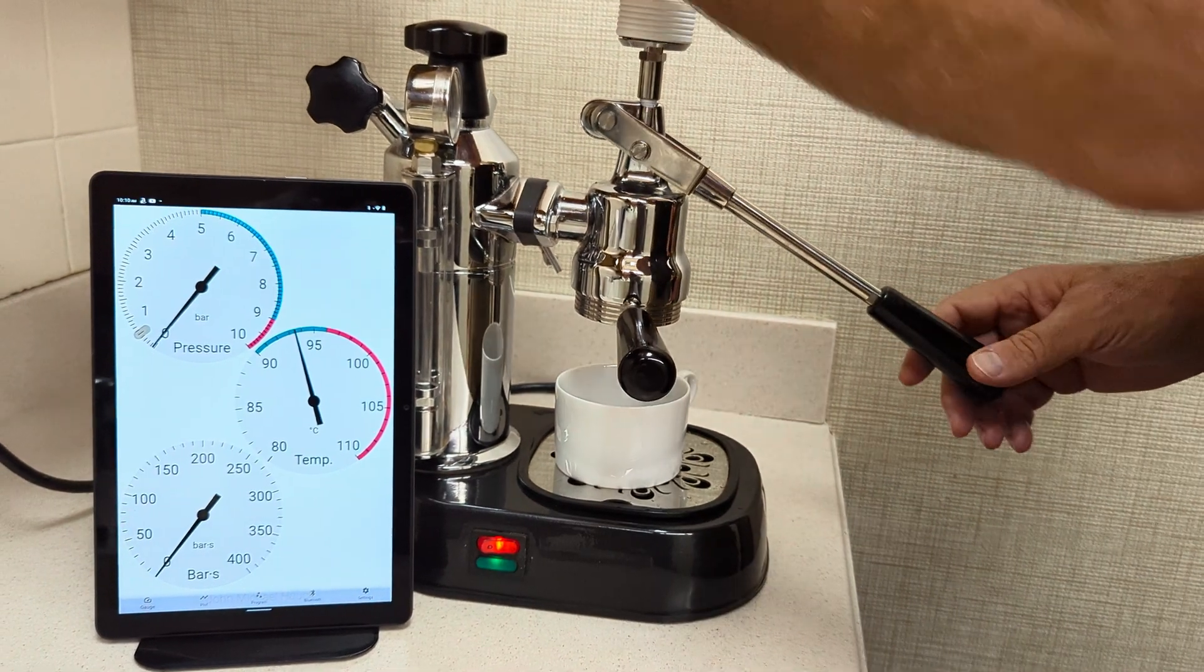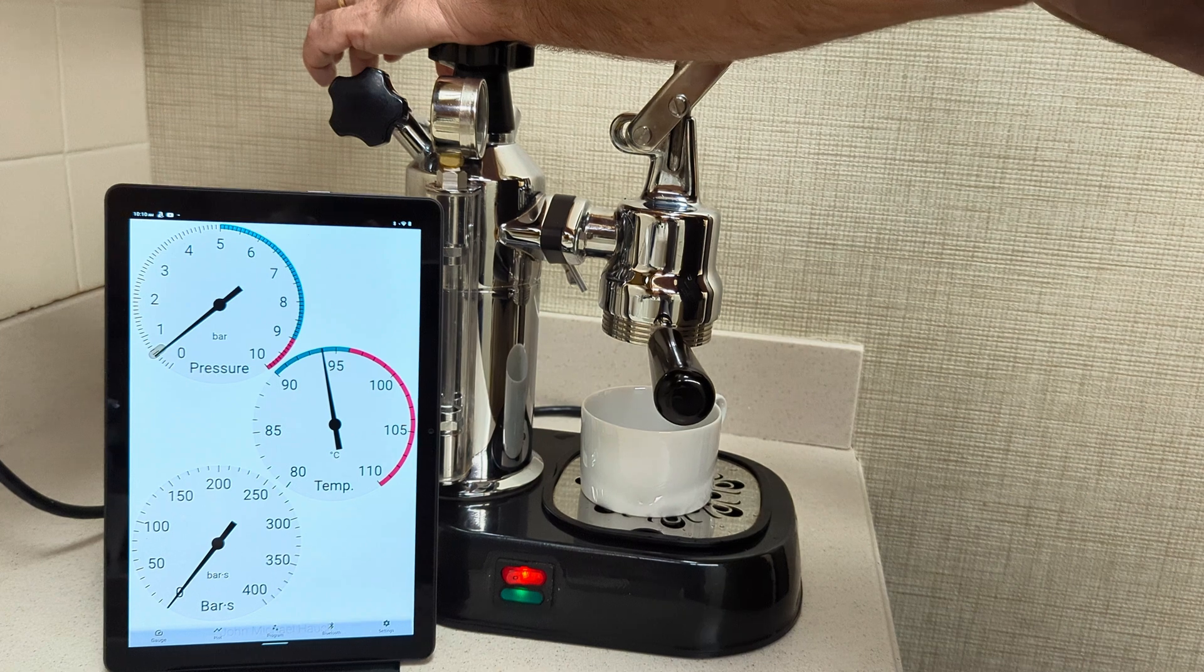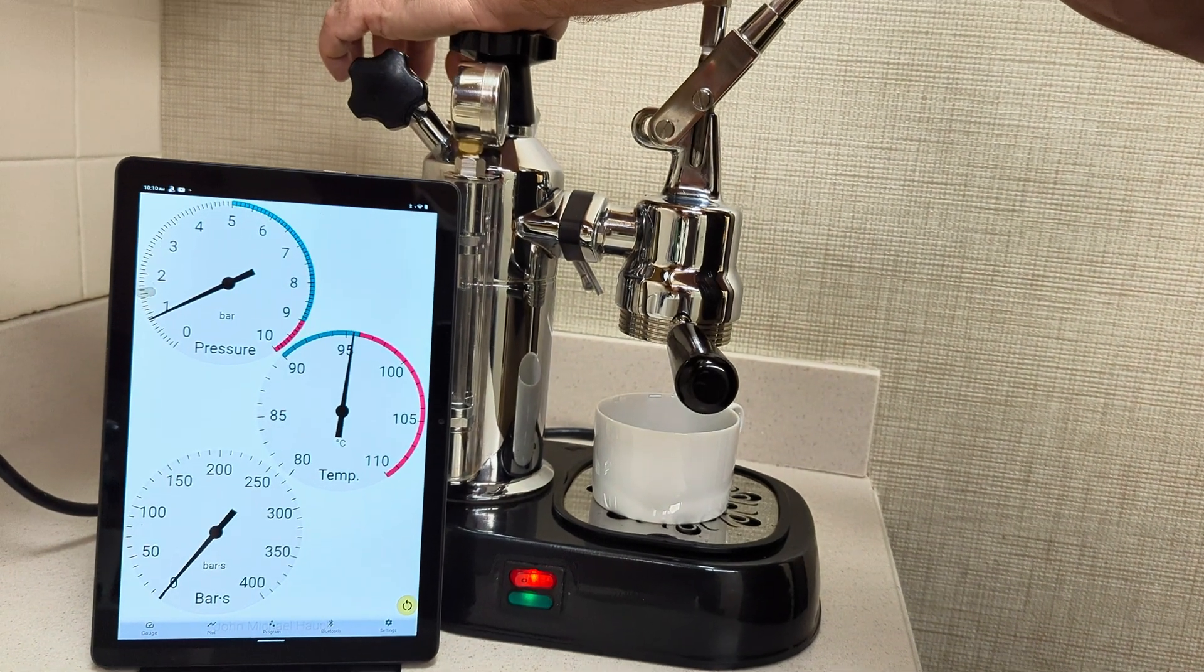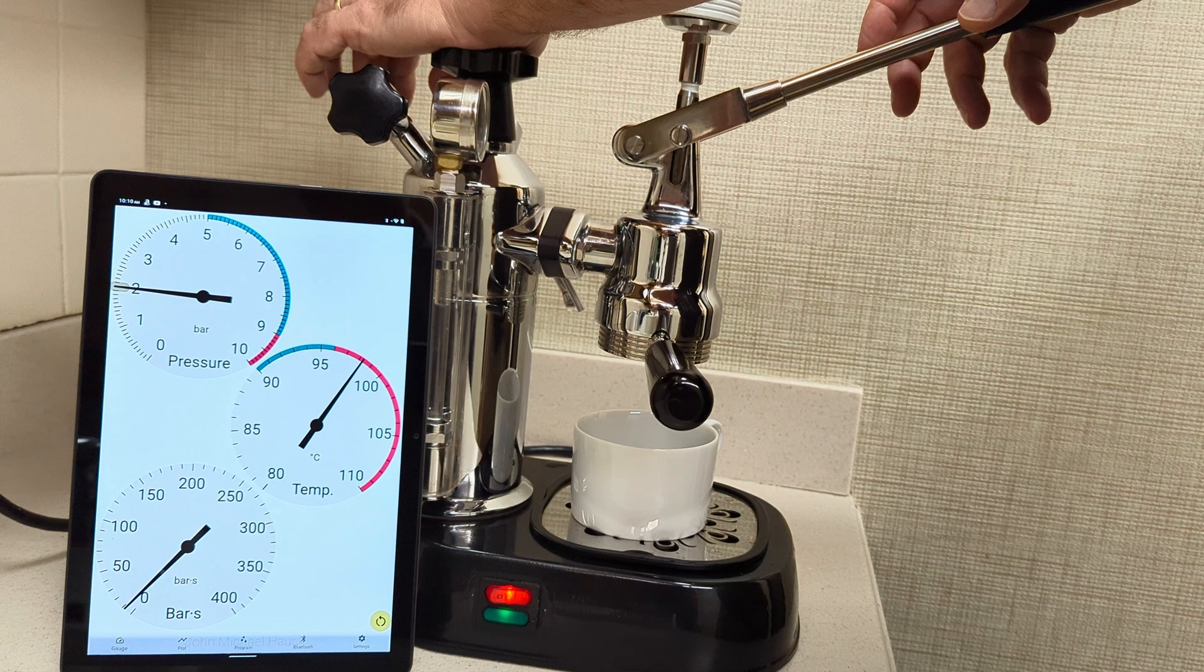All right, this is going to be the second shot, and I added the bar S, which is the accumulated pressure over time. And we'll go ahead and do a little pre-infusion at about two bar, just a little bit of pressure on the lever.